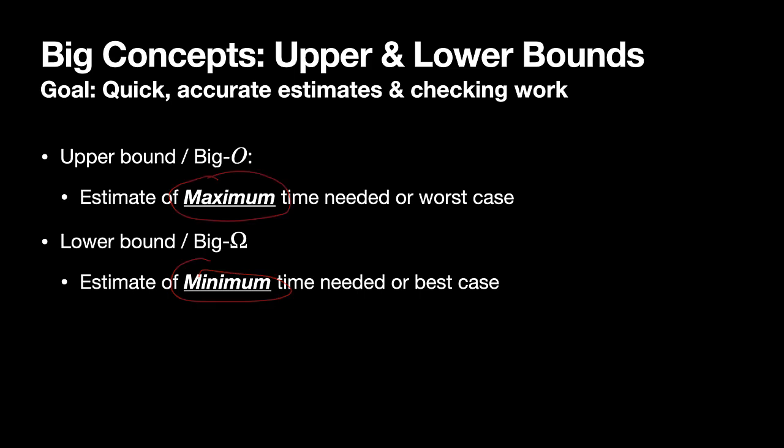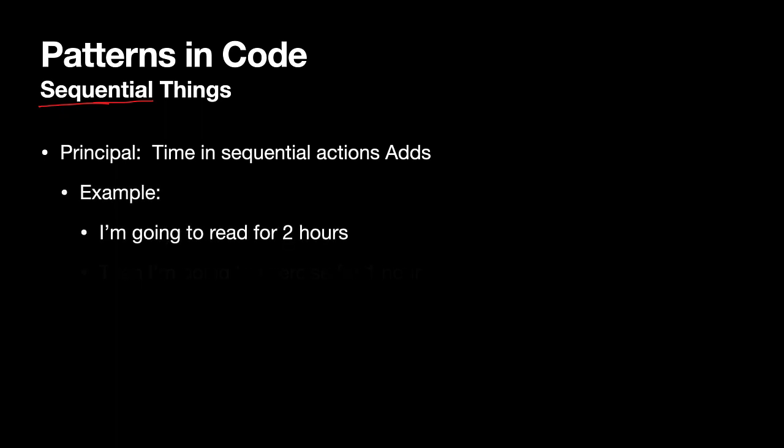So now let's talk about patterns we see in code. One of the patterns we see in code is the concept of sequential things. Basic principle: time in sequential actions adds. So what do I mean by that? Let's look at an everyday example. I'm going to read for two hours, and then I'm going to exercise for one hour. Total amount of time? Three hours. I did a sequence of two things. The amount of time total is just adding up each of those individual things.